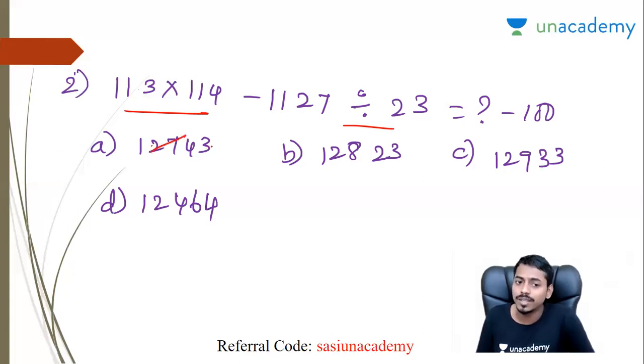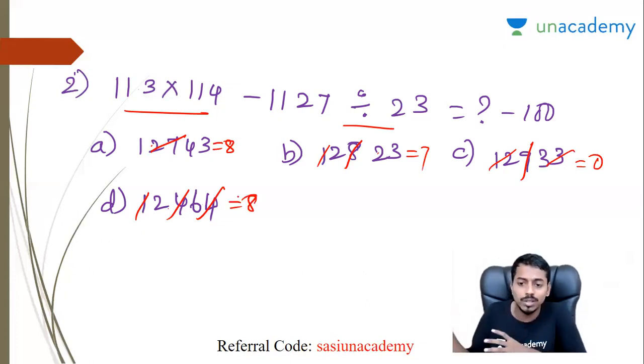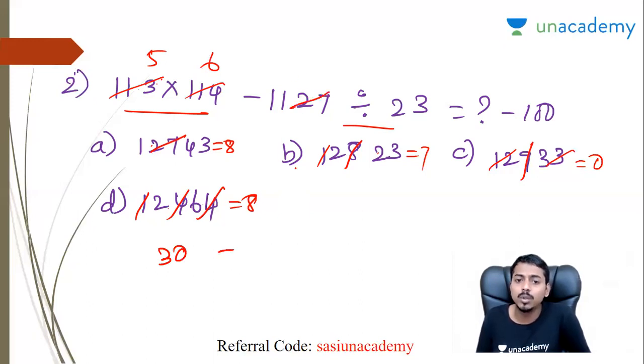So working through the calculation: 113, 114, 1127. Add the digits: 9 cancel, 4, 3, 7, 8... continuing through the digit sum method to verify each term.